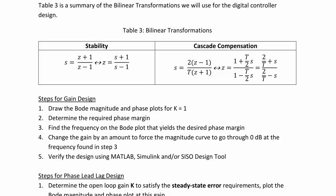Table 3 is a summary of the bilinear transformations we will use for digital controller design. We actually used the one on the left in the last lecture, the bilinear transformation for stability, and then we made a Routh-Hurwitz table to test the stability of a digital control system. And it is s equals z plus 1 over z minus 1 transforms to z equals s plus 1 over s minus 1.